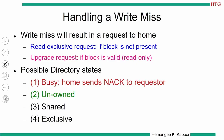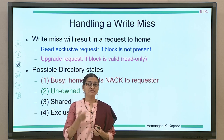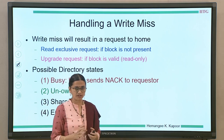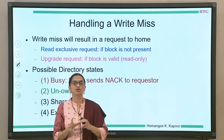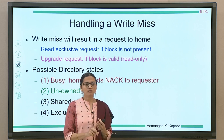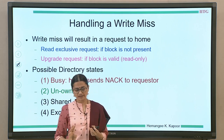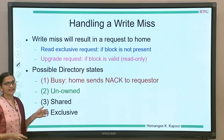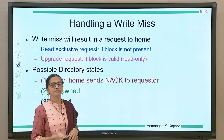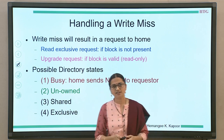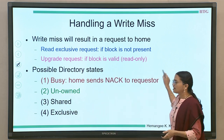Next is the handling of write miss. A write miss happens when a processor wants to write the data. It may have the block or it may not. If it does not have the block, the request is called read exclusive. If it has the block, it is called an upgrade request. Both these requests will go to the hub or eventually to the directory controller of the home node. The directory states could be multiple: busy, unowned (no sharers), multiple sharers (shared), or exclusive. The busy case is very easy — if the directory state is busy, simply NAK the request and it will be retried later.